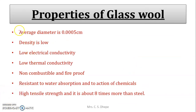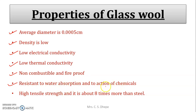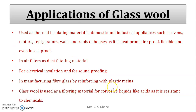Properties of glass wool: its average diameter is 0.005 cm. It has low density — it is very light in weight. It has low electrical conductivity and low thermal conductivity. It is non-combustible and fire-proof. It is resistant to water absorption and the action of chemicals. It has very high tensile strength — about eight times more than steel.